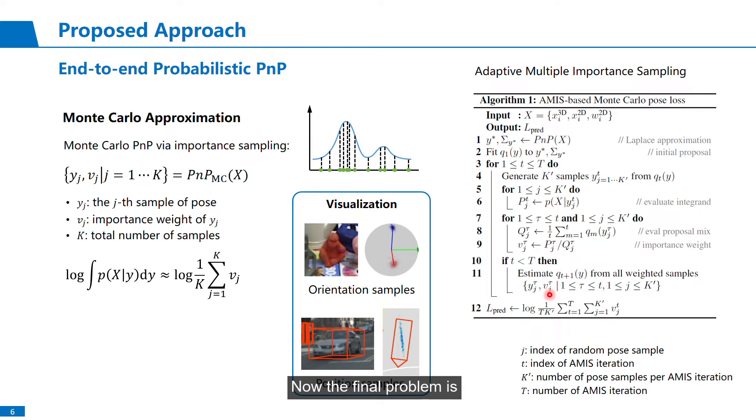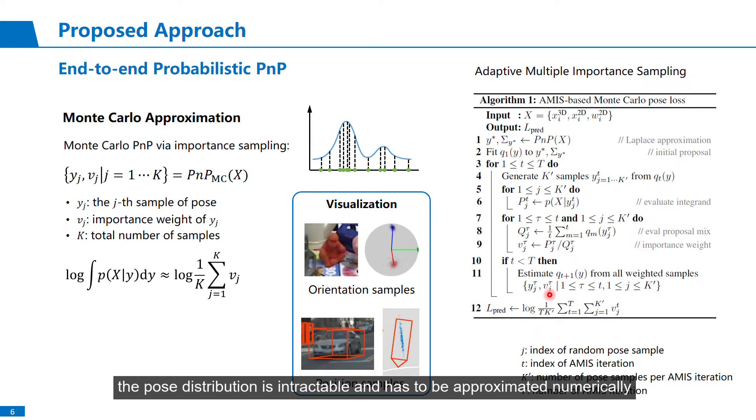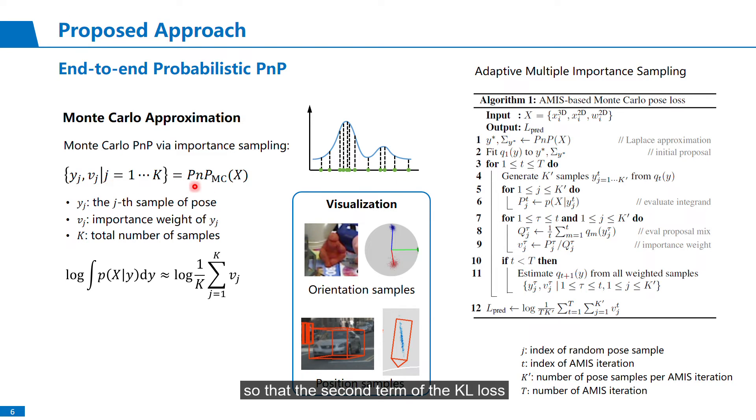Now, the final problem is, the pose distribution is intractable and has to be approximated numerically. We adopt the adaptive multiple importance sampling algorithm to draw weighted samples from the distribution, so that the second term of the KL loss is approximated by the importance weights.